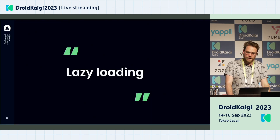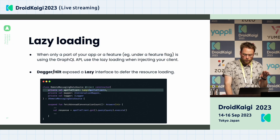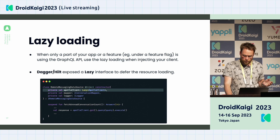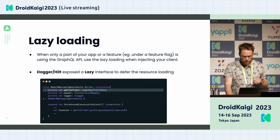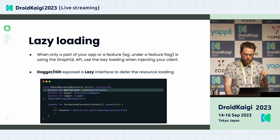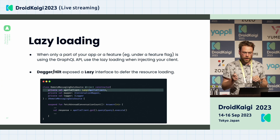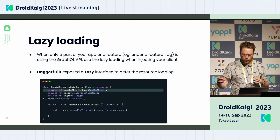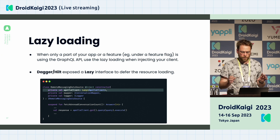Take advantage of lazy loading as well. When only a part of your application uses GraphQL — for example under a feature flag — take advantage of Dagger Hilt lazy loading. That way, only when you're using the feature will resources be loaded. We defer the initialization of the Apollo client to when resources will actually be useful, so we don't waste application resources.